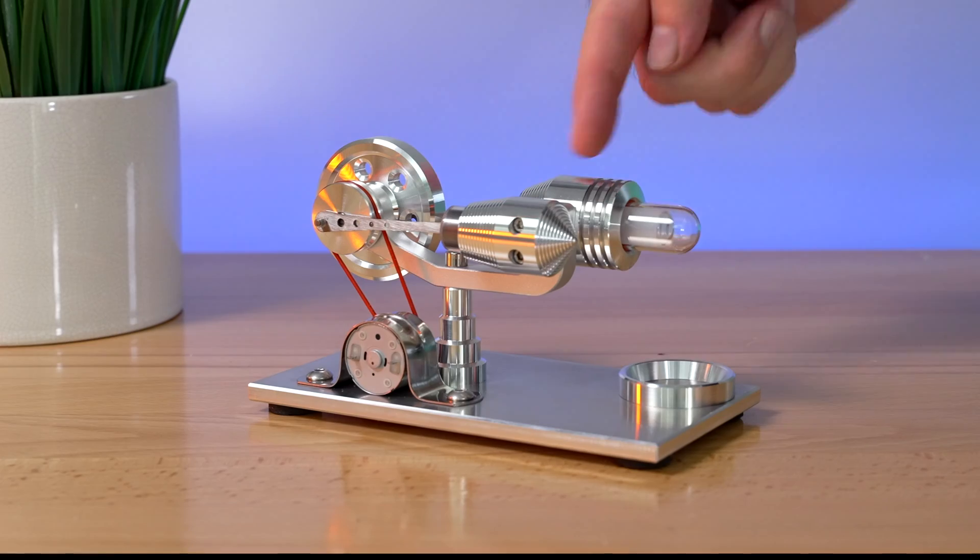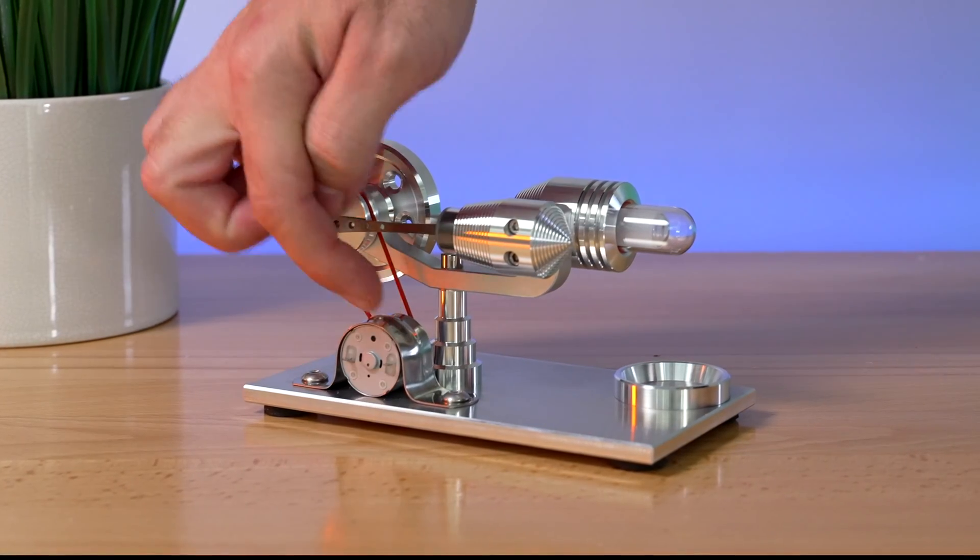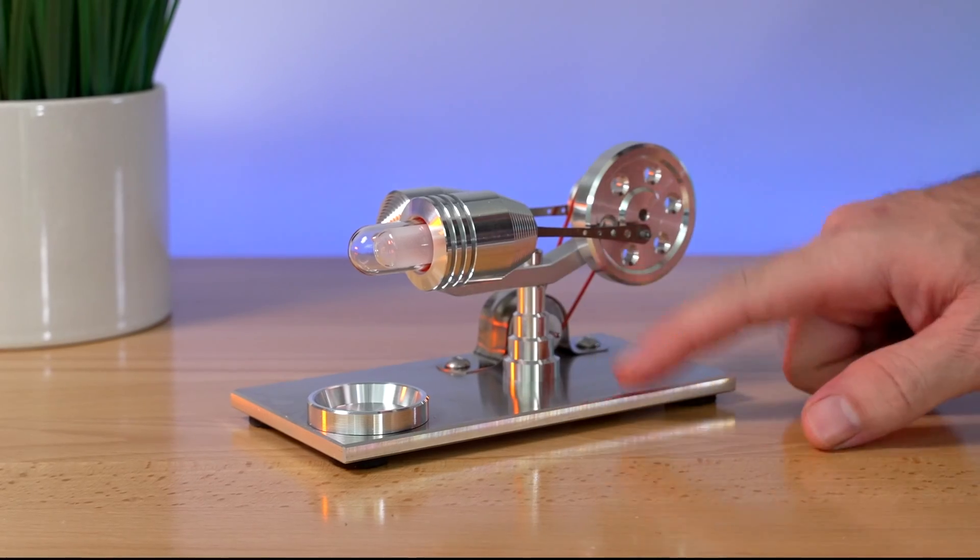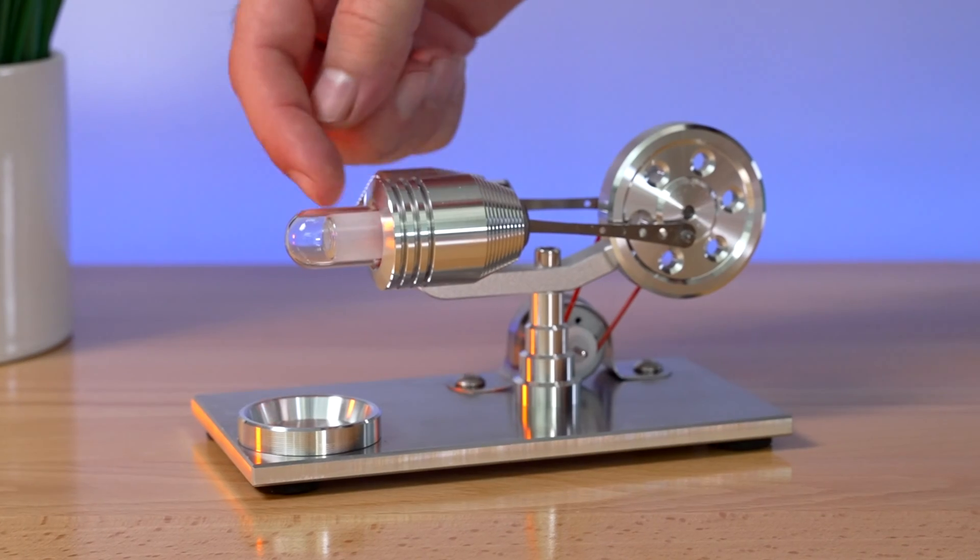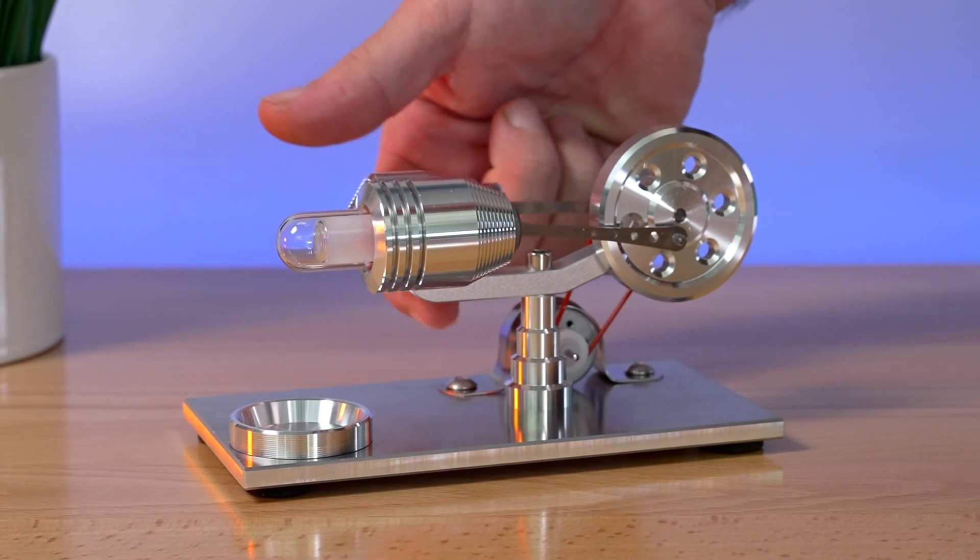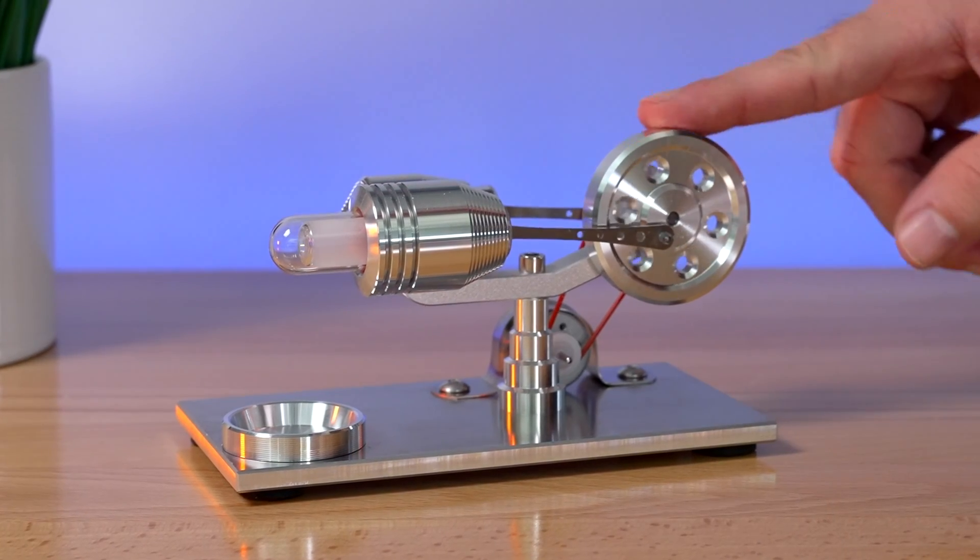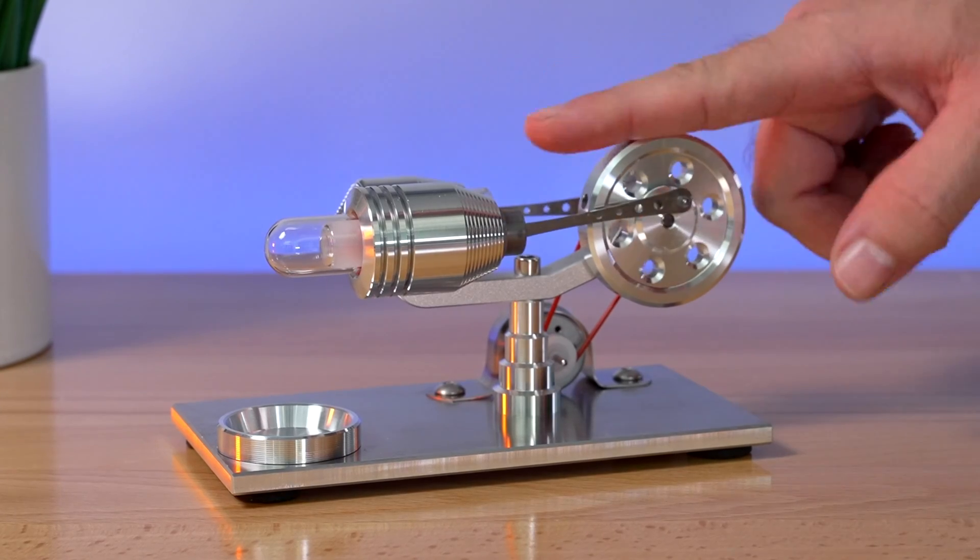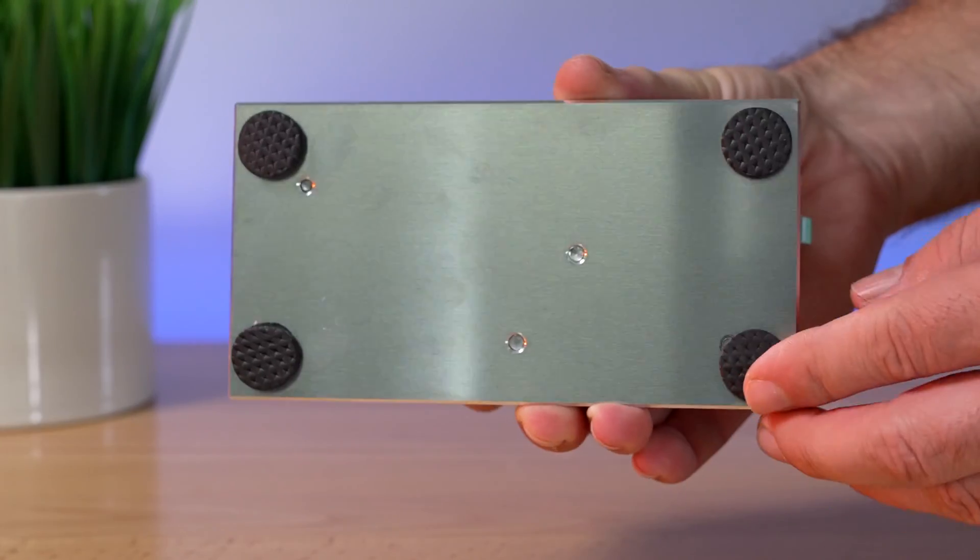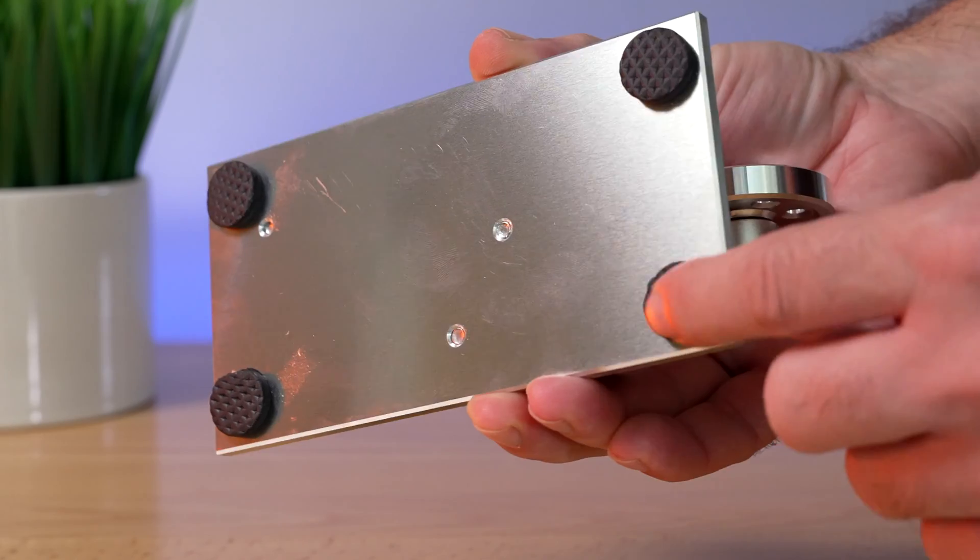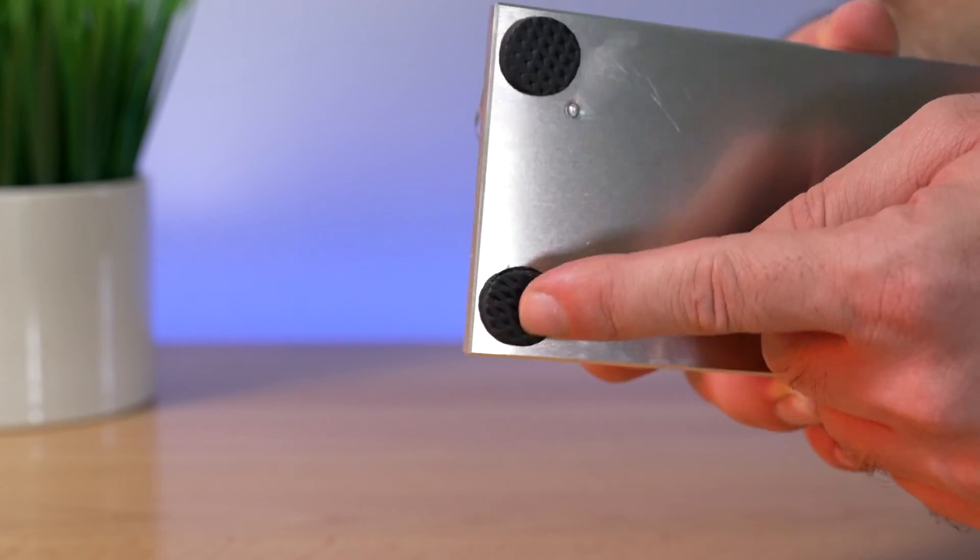So everything is metal. We got the generator here. Pretty thick, large base on the bottom. Glass tubes. All aluminum build with the brackets and everything. And the flywheel back here also is all metal and quite heavy. So this is what we see underneath. We just got some foam pads. They're not even rubber. This might jump around a bit.